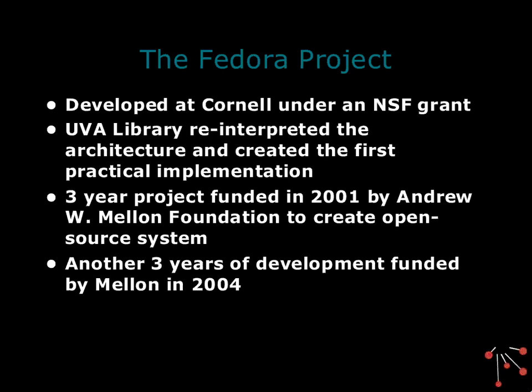Just a little bit of background for those of you who don't know. The Fedora project started in 2001. Fedora itself, the architecture, was developed at Cornell under an NSF grant, and they had CORBA-based software in 1998. UVA Library, where I worked, in 1999 was starting to look at how we were going to manage all the digital information we had. I found Sandy's paper, got to know them, got their software, played with it a bit. We then implemented a lightweight version that demonstrated it could scale up to about 30 million objects. Sandy and I then went to the Mellon Foundation and got a million-dollar grant for a three-year project that began in 2001, and that's what brought out the very first versions of Fedora.